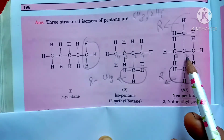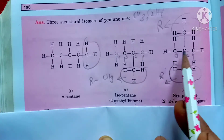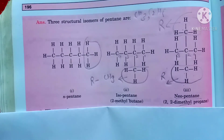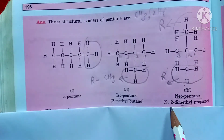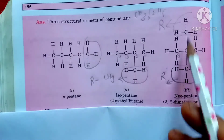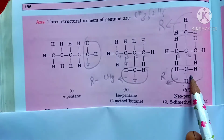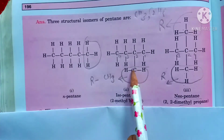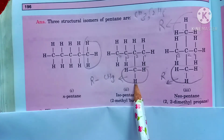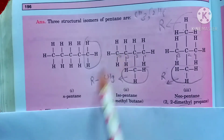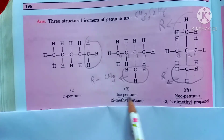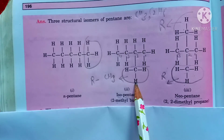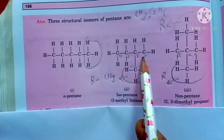Two groups at the same position, so we call it 2,2-dimethyl. Then counting the main chain: methane, ethane, propane — three carbon atoms in the main chain — so it is 2,2-dimethylpropane. For isopentane, there is one group at the second position, so it is 2-methylbutane. The counting starts from where the group is closer. So neopentane is also called 2,2-dimethylpropane, and isopentane is also called 2-methylbutane.